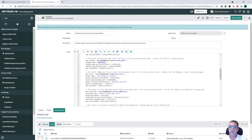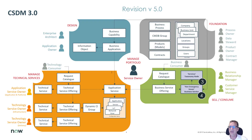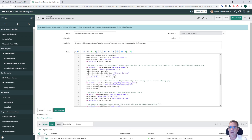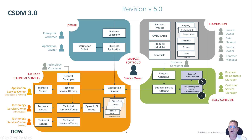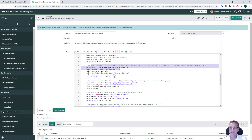Step 4 creates the business service called 'non-emergency issues.' Step 5 creates a service offering underneath that — a more refined definition of the service called a stratification. In this case, 'report a streetlight out' is the business service offering.